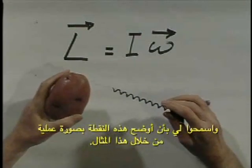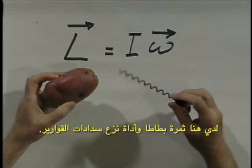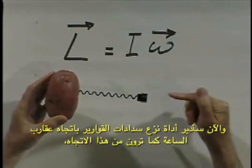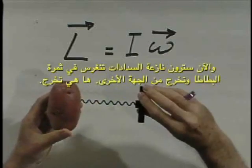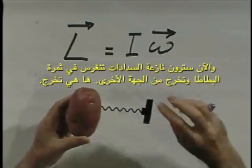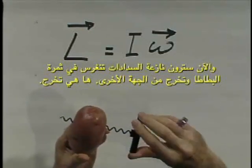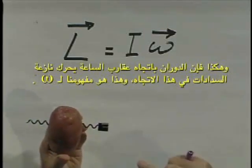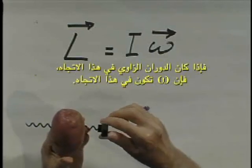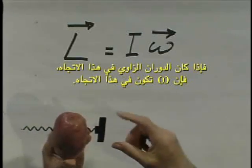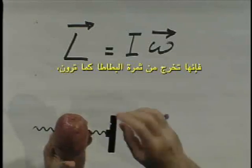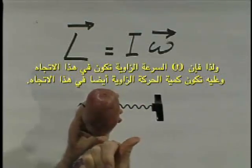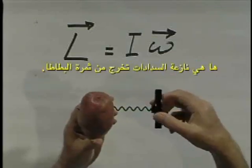I want to demonstrate this with a potato and a right-handed corkscrew. I'm going to turn this corkscrew clockwise as seen from this direction. Notice I turn it clockwise, and what you'll see is that the corkscrew goes into the potato and comes out on the other side. So a clockwise rotation moves the corkscrew in this direction — that is our convention for omega. If I go counterclockwise, the corkscrew comes out the other way, so now angular velocity omega and therefore angular momentum are in the opposite direction.